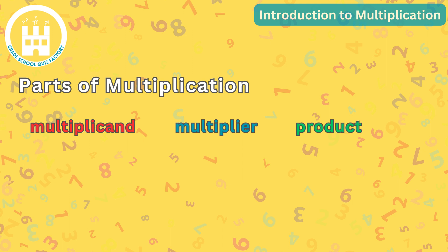For example, in the multiplication problem 3 times 4 equals 12, 3 is the multiplicand - the number being multiplied. 4 is the multiplier - the number by which we multiply the multiplicand. And 12 is the product - the result of our multiplication.